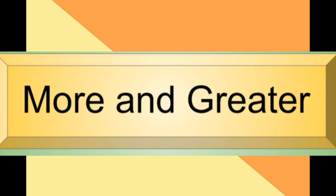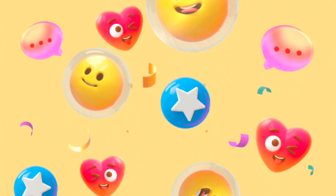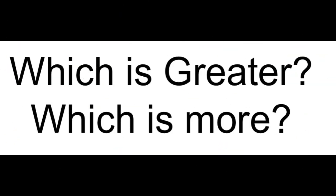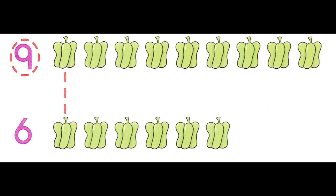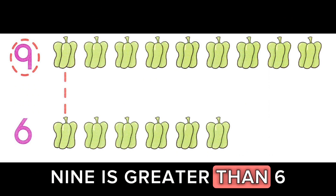More and greater. I have six cookies. You have five cookies. I have more cookies. I have a greater number of cookies. Which number is greater? Nine is greater than six.